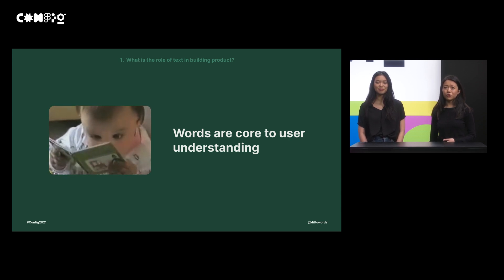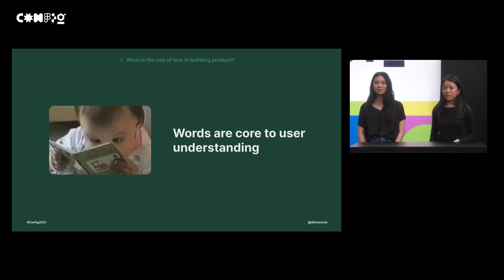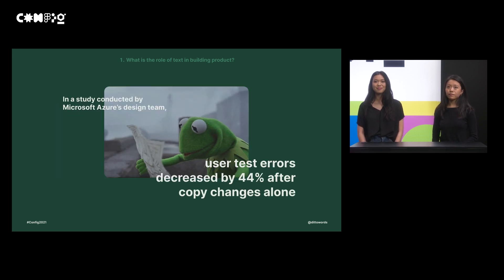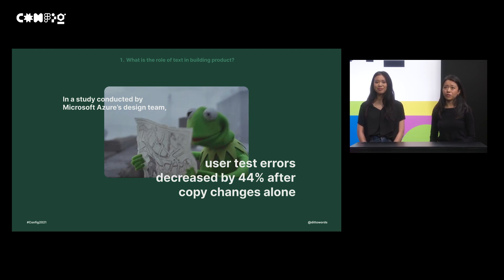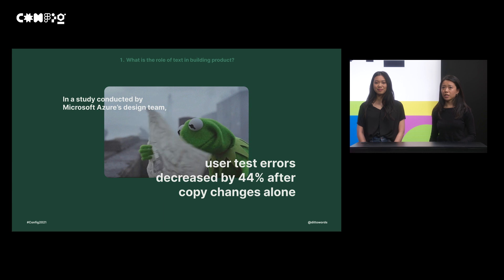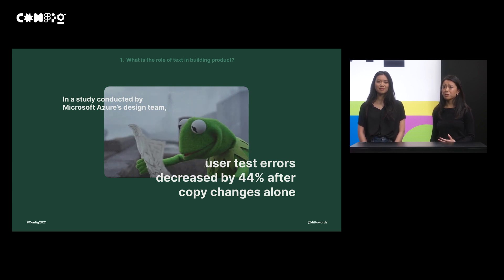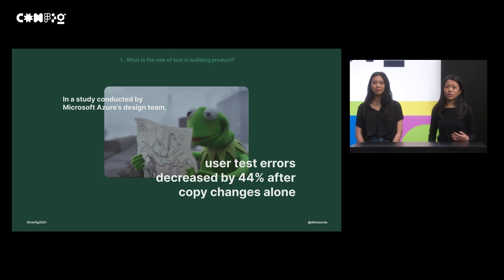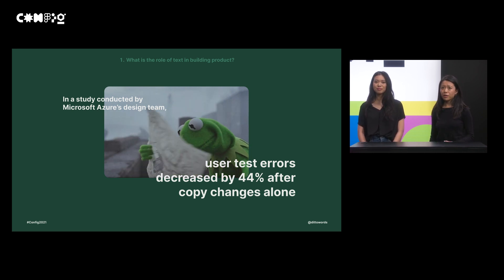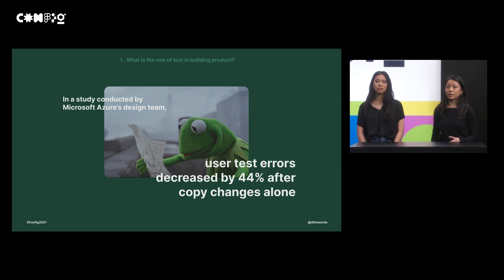Text serves as your product's guardrails. Whether it's an error message, a new user experience, or an empty state, it's often text that guides users when they don't know what to expect. In a study conducted by Microsoft Azure's design team, user test errors decreased by 44% after copy changes alone. It's in moments of mismatched expectations that clarity is most critical. This is especially true as the role of software expands — from health tech to financial products to security and authentication — where the digital experience now carries the sole responsibility of guiding people through complex and important decisions.